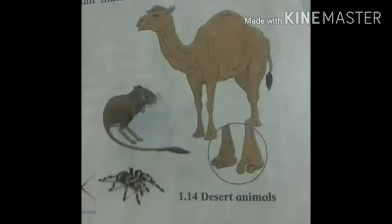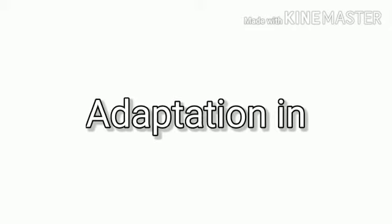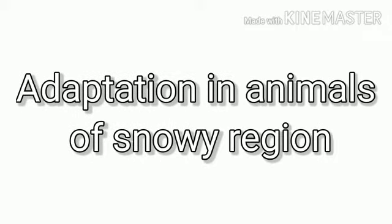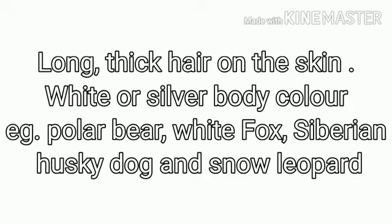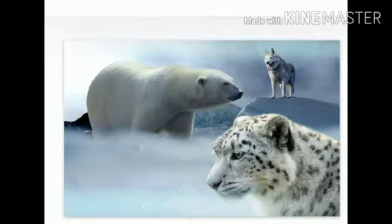Adaptation in desert animals — as seen in this picture, examples include camel, rat, etc. Adaptation in animals of snowy regions: they have long, thick hair on the skin and white or silver body color. Examples are polar bear, white fox, Siberian husky dog, etc.